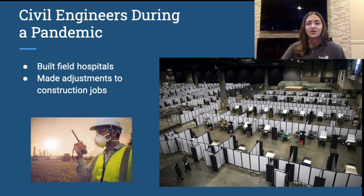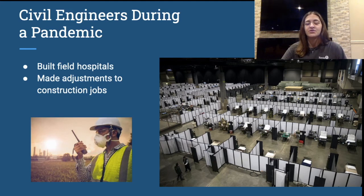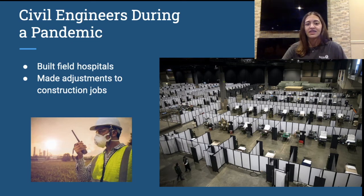Civil engineers were also tasked with adjusting their current jobs. Construction jobs are going on 24-7, and there were jobs underway right before the pandemic hit. In March, they had to put a halt to some of these jobs because we went into lockdown and people weren't allowed to go to work. Civil engineers had to make sure those jobs could stay put and were safe for people to live around — they didn't want anything to collapse or leak while they weren't working. Civil engineers had to put their brains to work and think of things they don't normally have to think of.